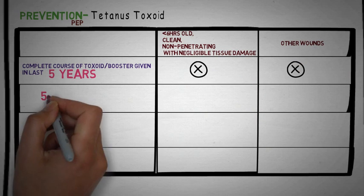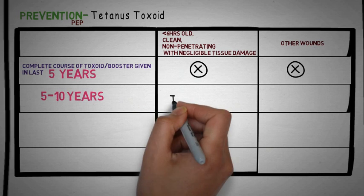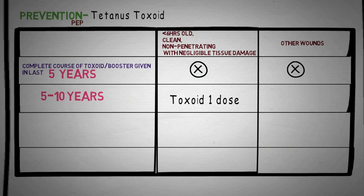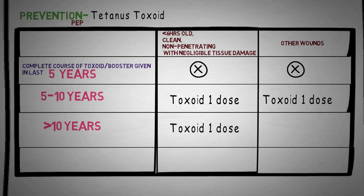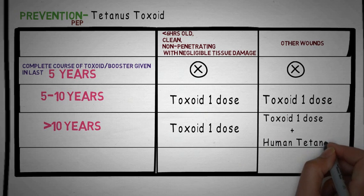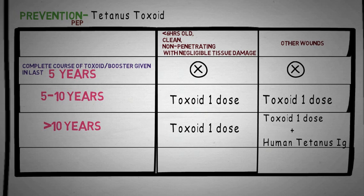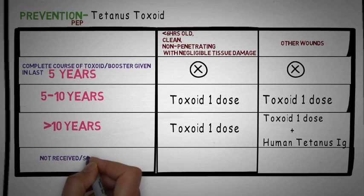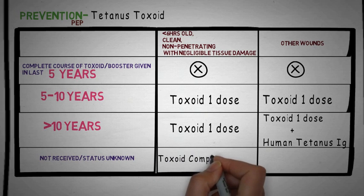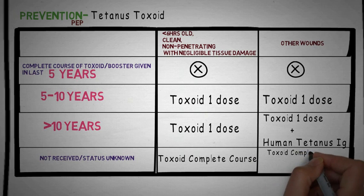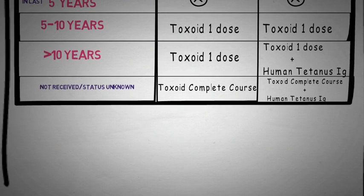In a patient who has received a complete course of toxoid in the last 5 to 10 years, a single dose of Tetanus toxoid needs to be given in both cases. For those who received it more than 10 years ago, a single dose of TT needs to be given in the first case, and a single dose of TT plus human Tetanus immunoglobulin needs to be given in the second case. For those who have never received the Tetanus vaccine or whose vaccination status is unknown, toxoid complete course is given in the first case, and toxoid complete course along with human Tetanus immunoglobulin is given in the second case.